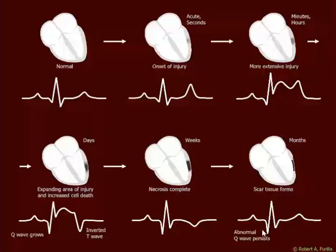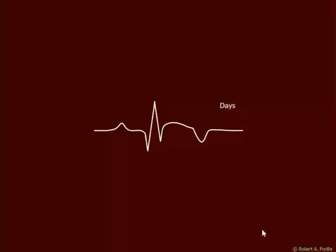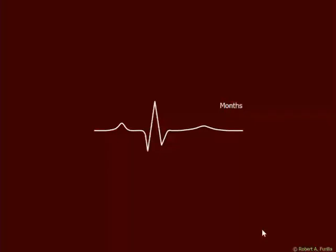In the next animation, we'll see acutely the hyperacute T wave followed by a STEMI — these changes slow down with time. Here's the hyperacute T wave, then the STEMI developing, the T wave inverting, the Q wave growing, the ST segment returning to normal, and the T wave beginning to revert to its upright position. As we get into the months, the Q wave continues to grow, and at the end we see that Q wave persisting.